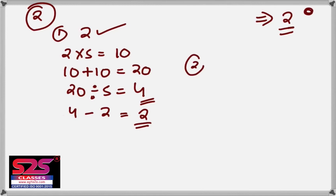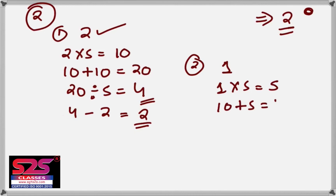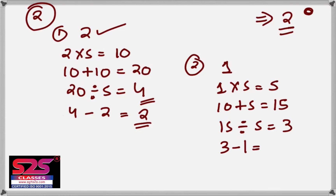Let's take one more example so you're confident about this trick. Taking the number as 1: multiply 1 by 5 to get 5, add 10 to get 15, divide by 5 to get 3, then subtract the original number — 3 minus 1 — which gives 2. So again, the final answer is 2.